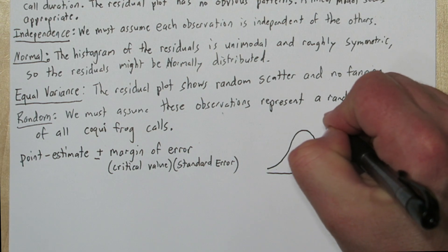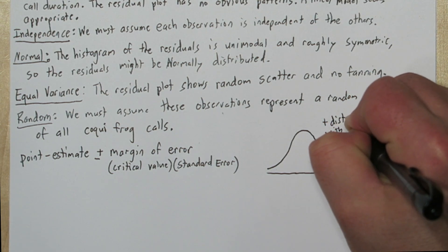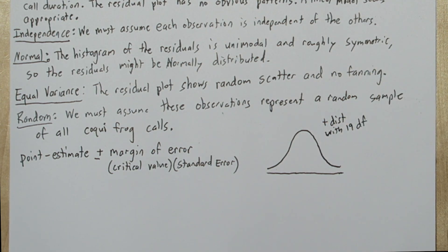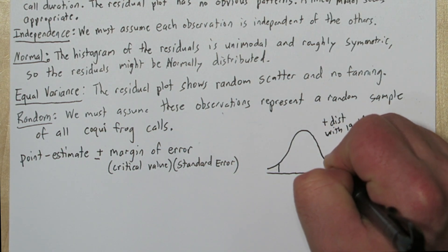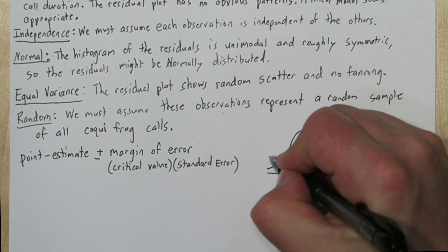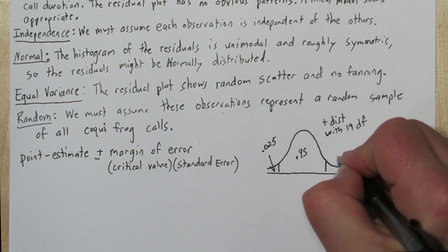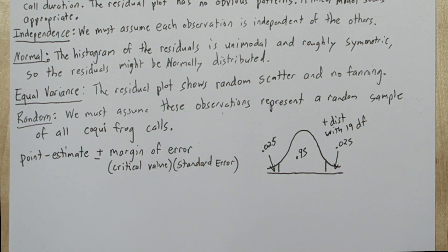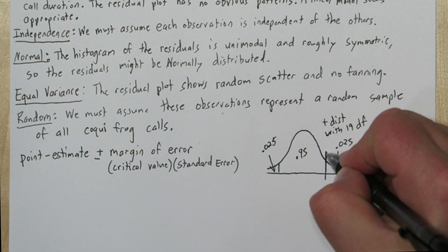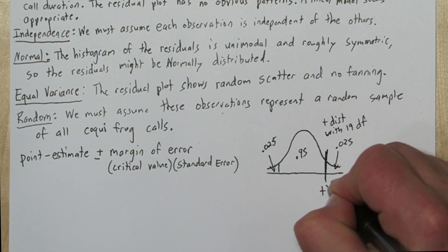So let's draw a T distribution with 19 degrees of freedom. Since we're building a 95% confidence interval, let's isolate the middle 95% of our distribution. That means in each of these tails, we have 2.5%. Now we can use inverse T to look up this value right here, which is T star.